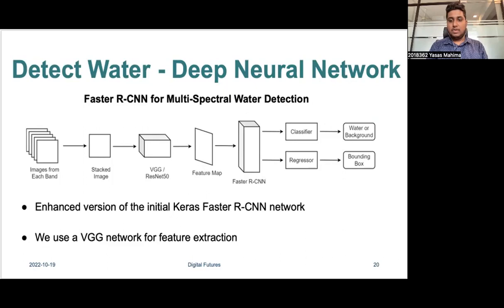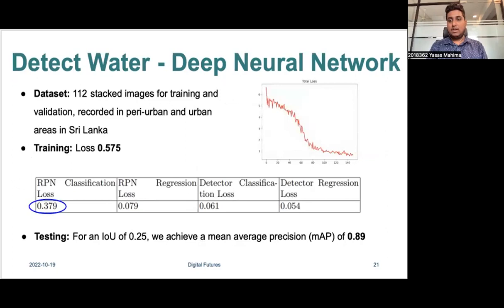Specifically, we enhance the initial RGB image-based Fast R-CNN model to handle stacked multispectral images with multiple bands. This backbone supports both ResNet-50 and VGG networks; for our experiment, we use the VGG network. We named this network Fast R-CNN Multispectral Water Detection. We train our network using 112 multispectral stacked images covering peri-urban and urban areas in Sri Lanka. After 150 epochs, our model achieves a training loss of 0.575, with the backbone's classification loss around 0.379. For testing, we use mean average precision as our main evaluation metric. For an IoU value of 0.25, we achieve a mean average precision value of 0.89.